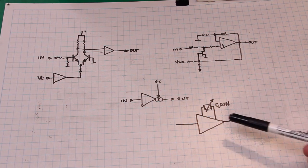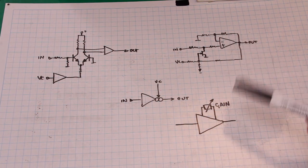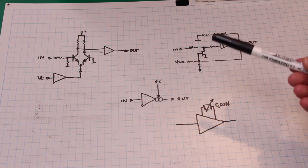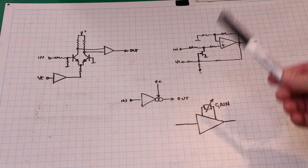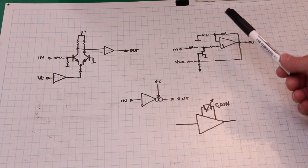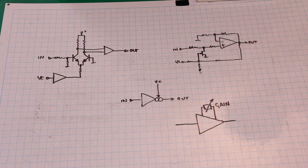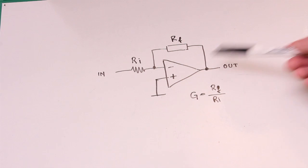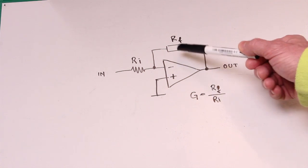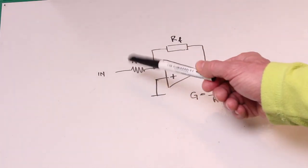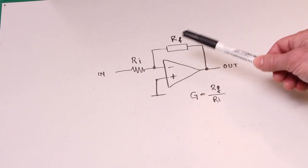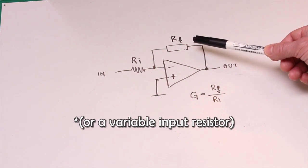There are several ways to make a variable gain amplifier or a voltage-controlled amplifier however for the sake of simplicity and to keep the components count low I'm going to avoid transconductance amplifiers and sticking with the familiar operation amplifier. The gain of an inverting operation amplifier is given by the ratio between the feedback resistor over the input resistor and so to change the gain what we need is a variable feedback resistor.